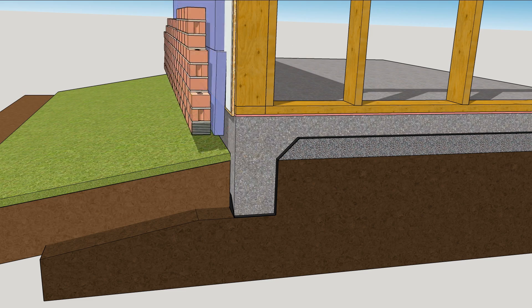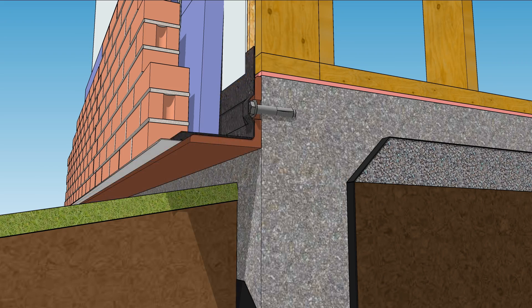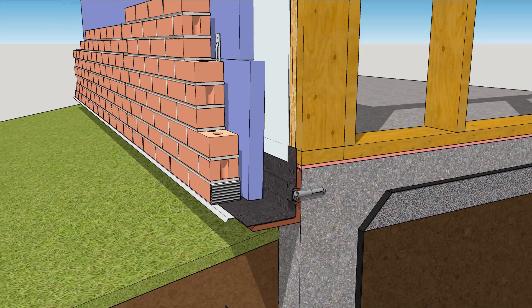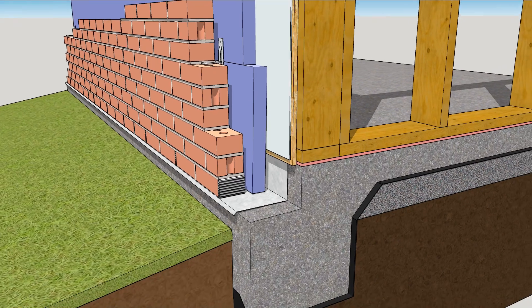But when you add brick to the picture, things get a little more complicated. Basically, you need a shelf to support the brick. This can be either a piece of angle iron bolted to the foundation, or it can be a cast-in-place step.